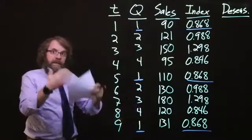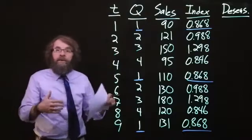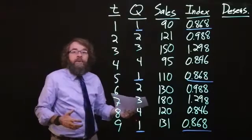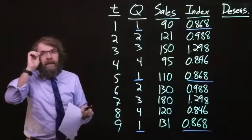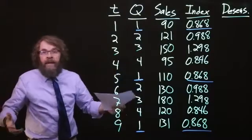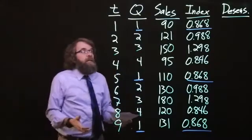So, reversing that logic, flipping it upside down, we're going to take what actually happened and divide it by the seasonal index to get our estimate of what would have happened had there been no seasonality.